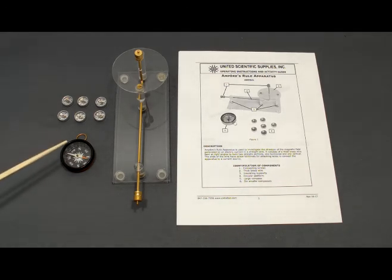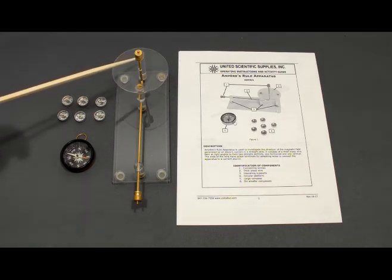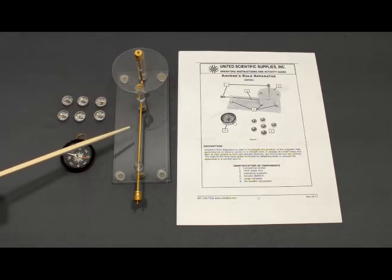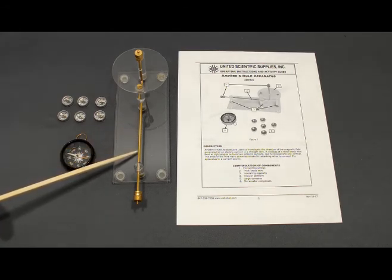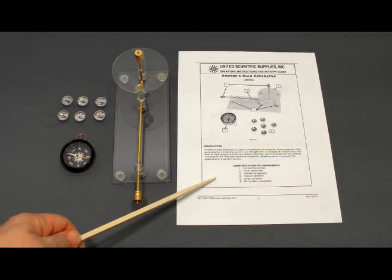The apparatus comes with a large compass, six smaller compasses, a bent wire which allows students to see the magnetic field around a vertical wire and the magnetic field under a straight wire, as well as an activity guide that has three guided experiments.